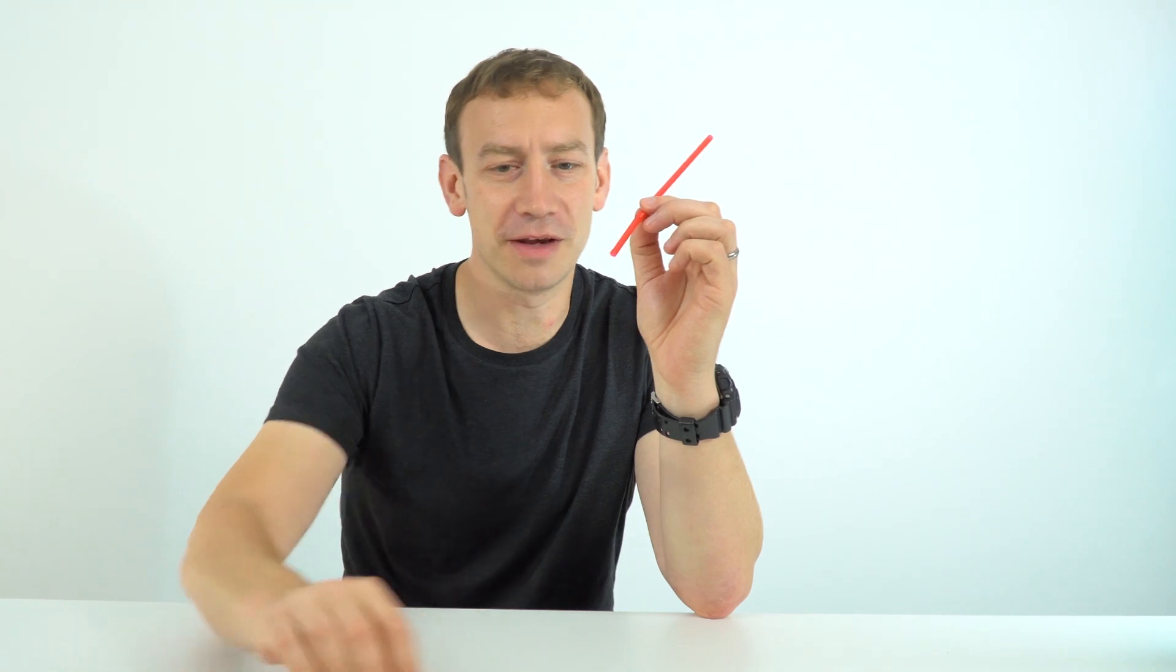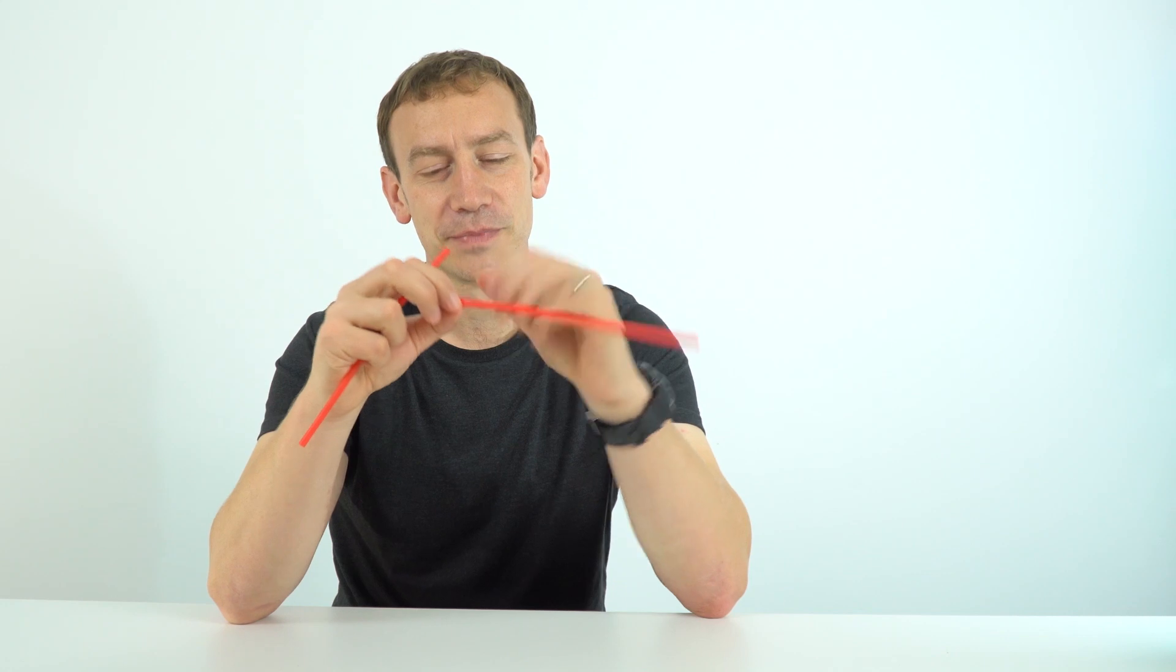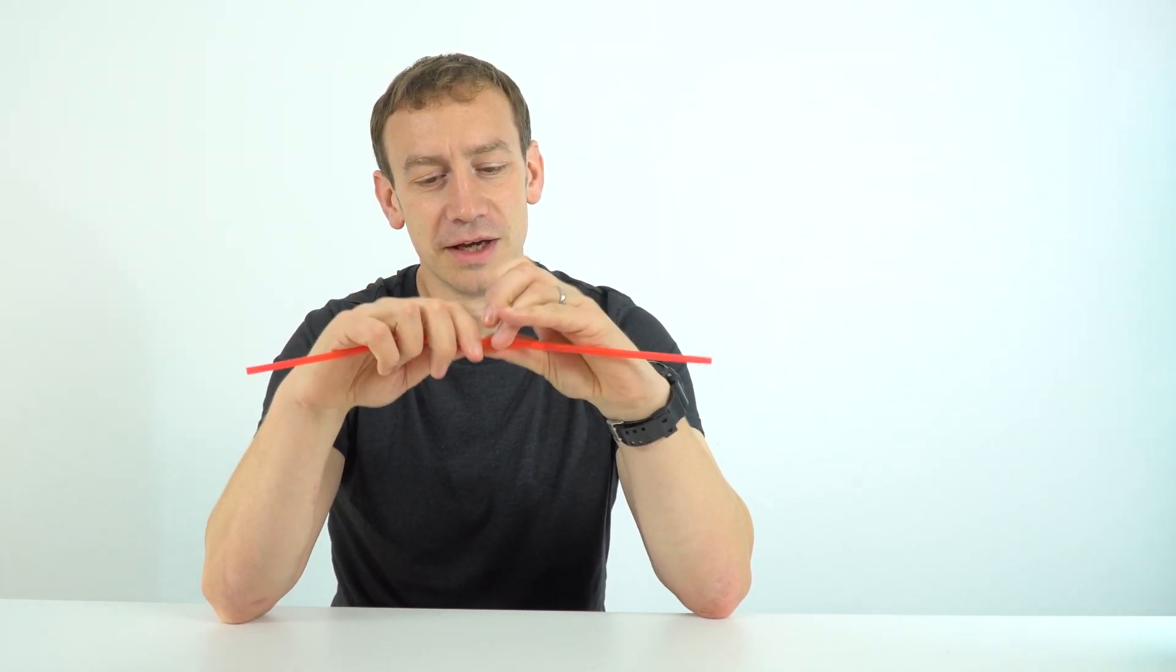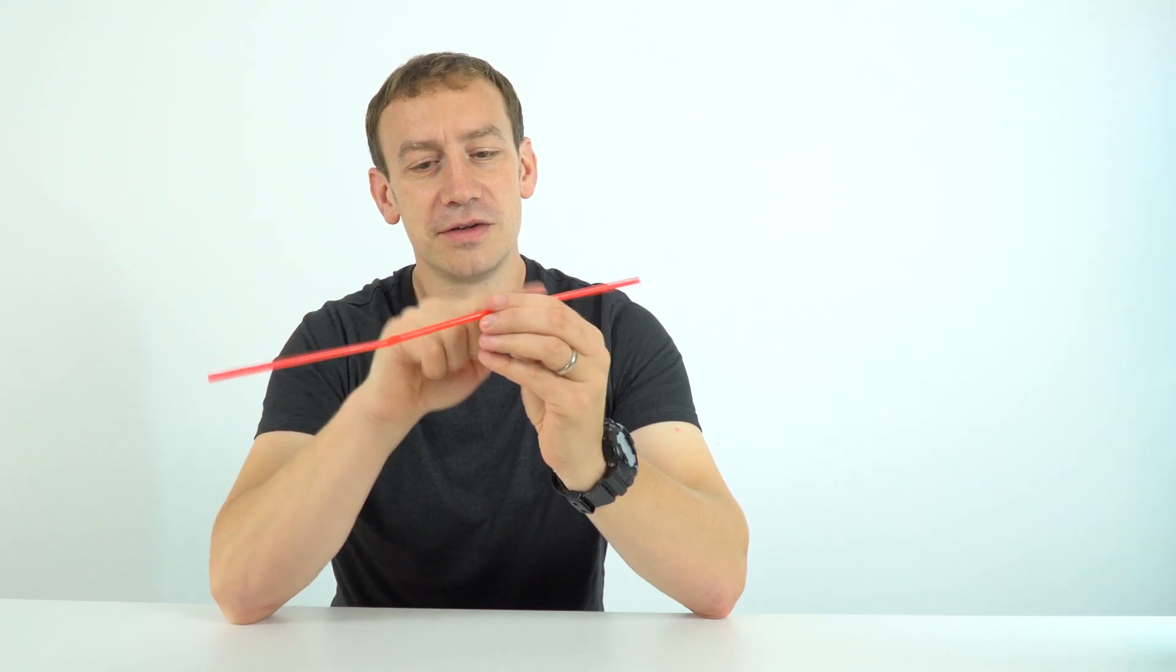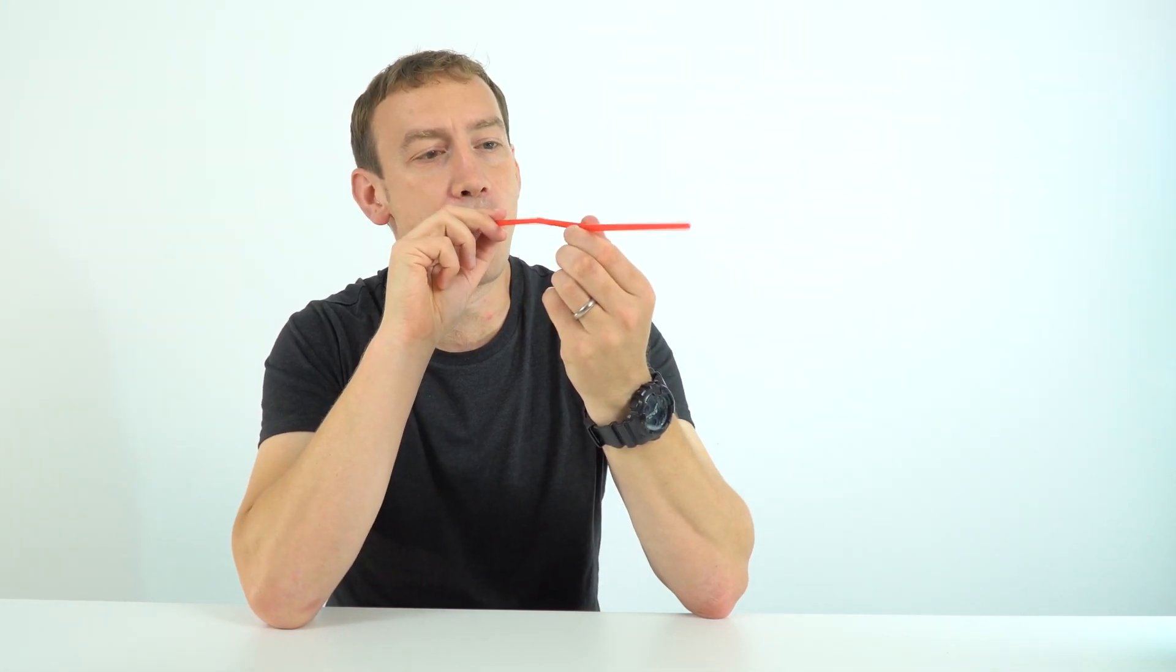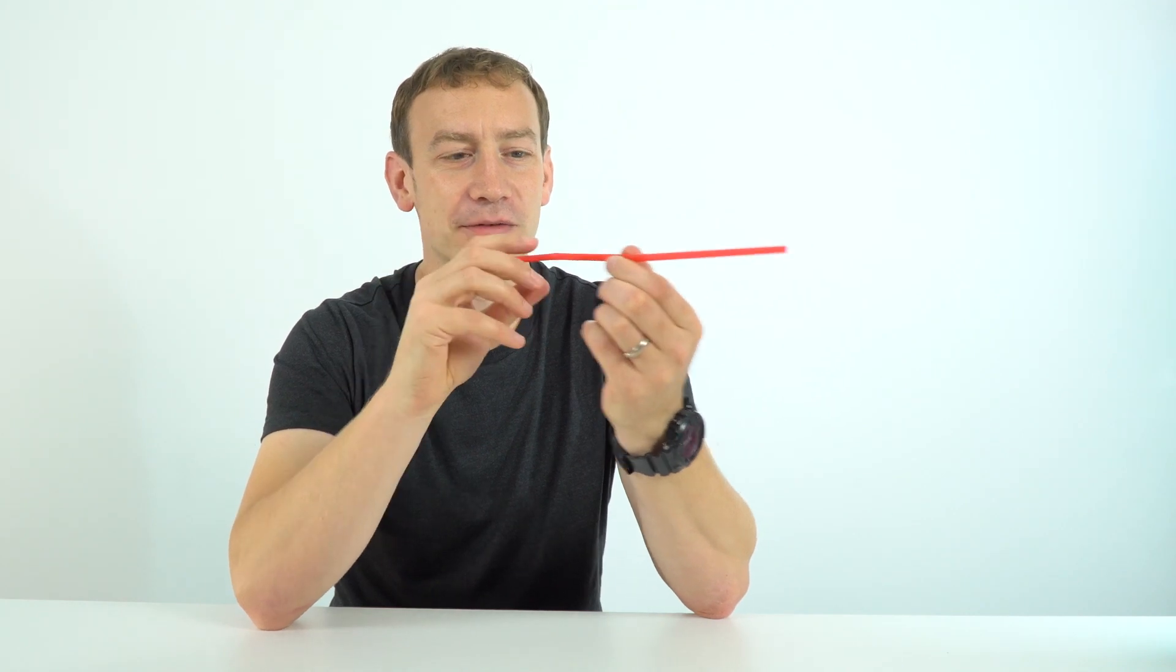But what happens if I had two of these thin straws? Now if I was to connect them end to end, this is a bit like placing electrical resistors in series. Now the resistance of each of these has stayed the same, but what I'm going to do now is if I have two of these and I blow, for the same force I'm applying, only half the amount of air gets through.